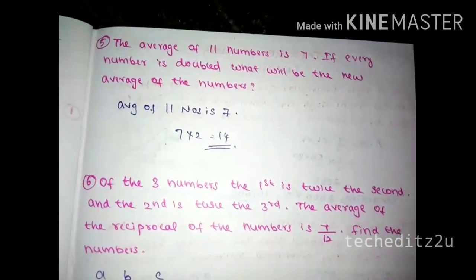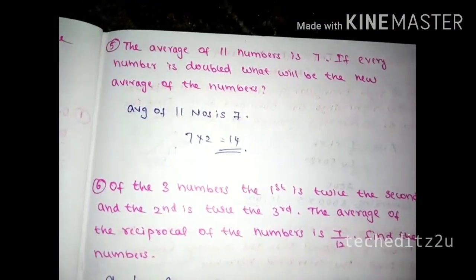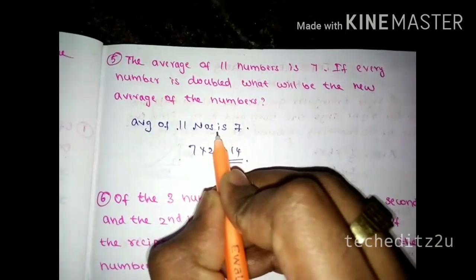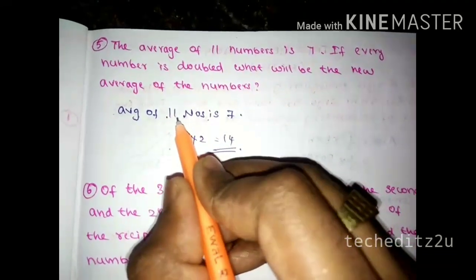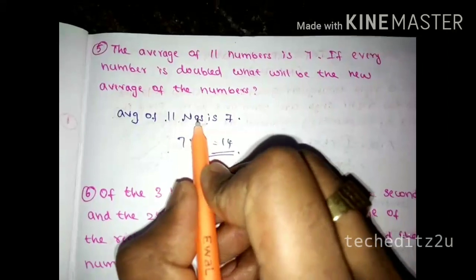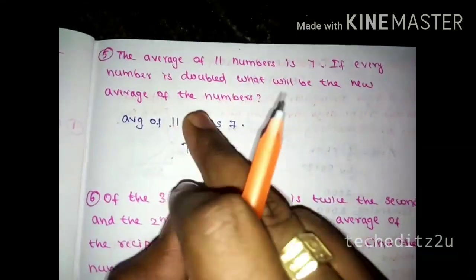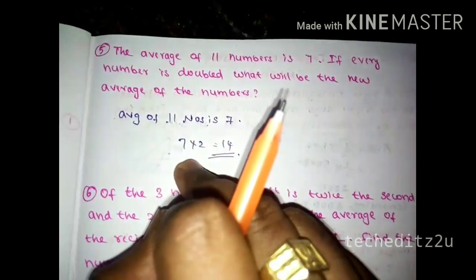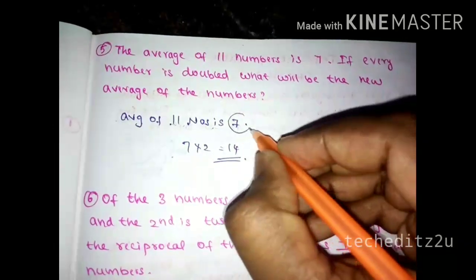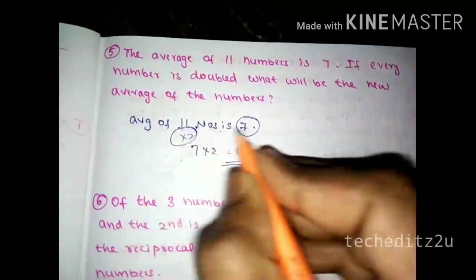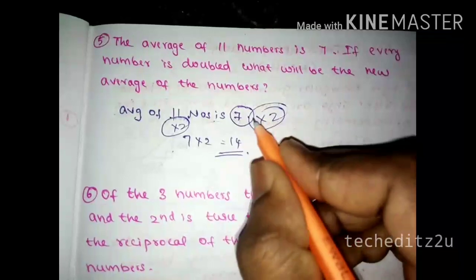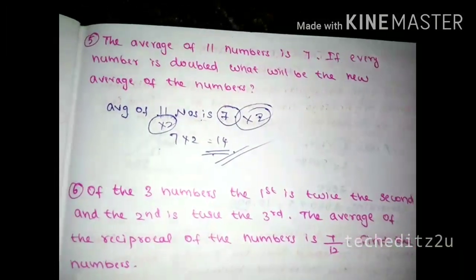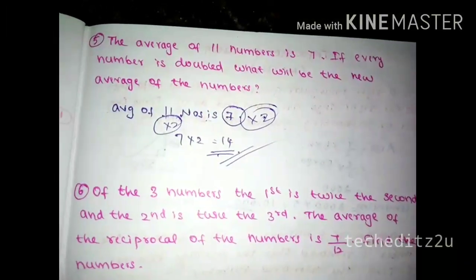The average of 11 numbers is 7. If every number is doubled, what will be the new average? The average of 11 numbers is 7. If every number is multiplied by 2, the new average will also be multiplied by 2. So 7 times 2 equals 14. That's the answer. If every number is doubled, the average doubles too.